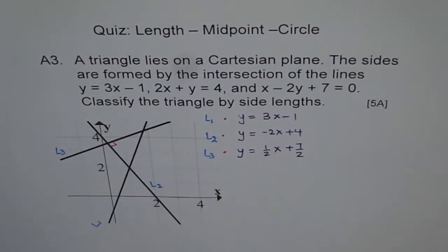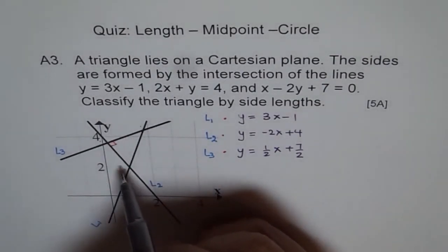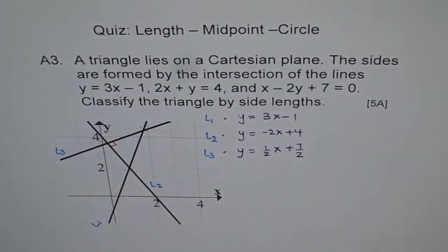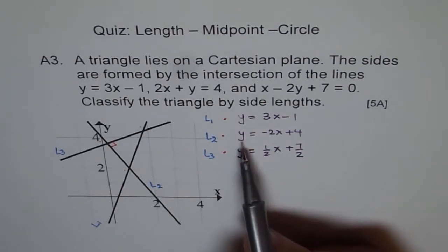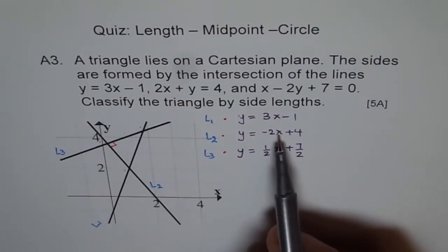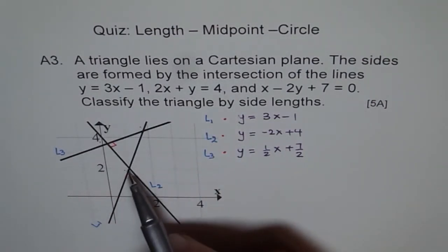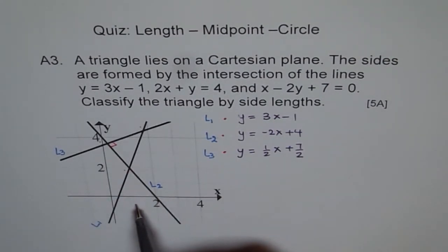We have confirmed that the triangle is a right triangle, so it cannot be equilateral; it could be isosceles. You can check the lengths of the two sides forming the right angle. If they are equal, it is isosceles; otherwise it is scalene. To find these points you have to simultaneously solve the equations — for example, solving lines 1 and 2 together: subtract one equation from the other to find x, then substitute back to find y, giving you the intersection point of lines 1 and 2, which from the graph appears to be approximately (1, 2).